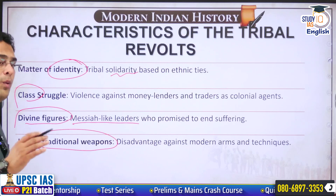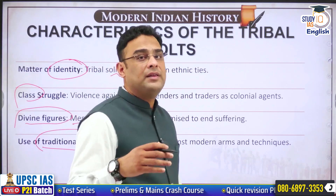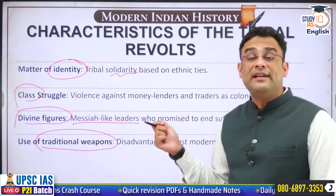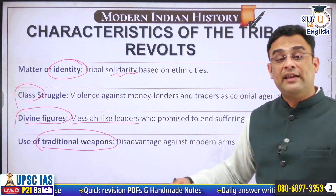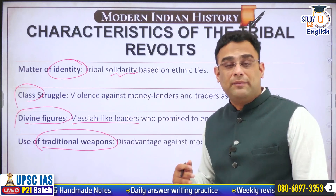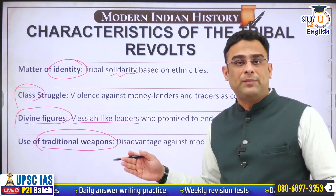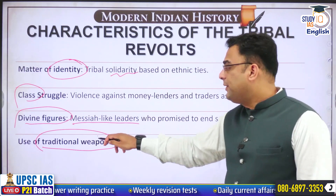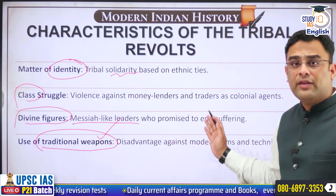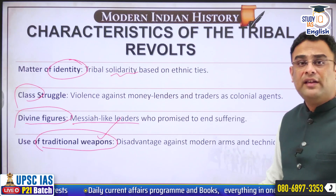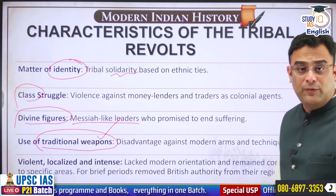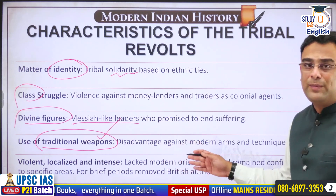Another characteristic is the use of traditional weapons. While taking on a modern colonial state, the tribals who had no access to modern weapons relied on weapons they had been traditionally using — and they used them to great effect. During the course of many of these revolts, British rule was completely swept away in particular areas for a brief period, using traditional weapons only. But ultimately the more superior modern forces, especially sent from Calcutta in the case of major revolts, will suppress them. Thus these revolts turned out to be largely violent, localized but very intense ones, fought with great vigor, commitment, courage and sacrifice.